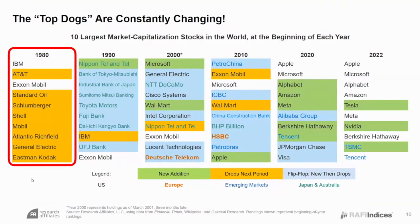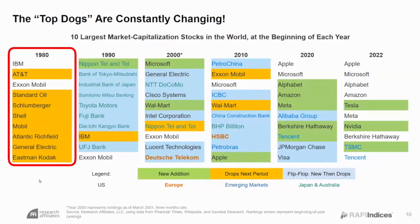Ten years later, only two survived — IBM and ExxonMobil, both way down the list. Ten out of ten of the top ten names in 1980 underperformed the MSCI World Index over the next ten years. Ten out of ten. And those were your ten largest holdings if you were indexing.